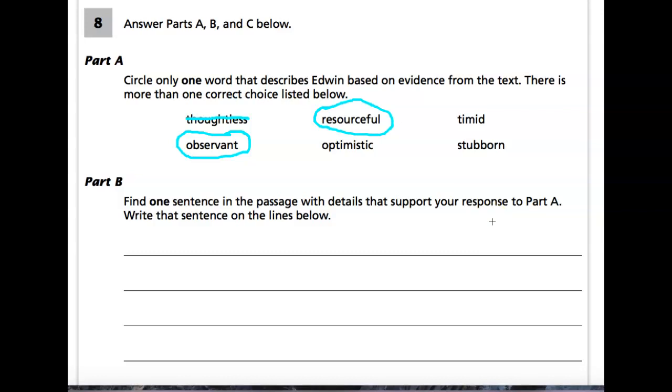And it's asking you to, whichever word you pick, and we're still not done, you're going to find the sentence in the passage that details the support to support your answer. So you're going to pick one of these words. I'm just giving you a hint on a couple, and then you're going to pick one. And then in part B, you're going to find a sentence in the passage with details that support your response, why you picked which word you picked, and how that sentence supports that. And we just talked about some of them. And then part C says find a second sentence in the passage with details that support your response to part A. So basically you are looking for two examples, if you pick observant, two examples from the text about how Edwin was observant, or two examples from the text how he was resourceful. So you don't have to do two for each, you just do two total.